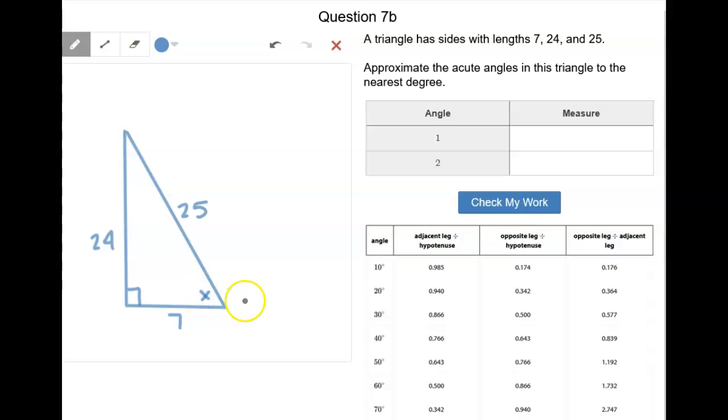So we'll just call this one x for now. So if I was going to use trig functions to figure out what x is, I need to use this table, because we haven't figured out how to do this quite yet with our calculator. So it's still going to be an approximation.